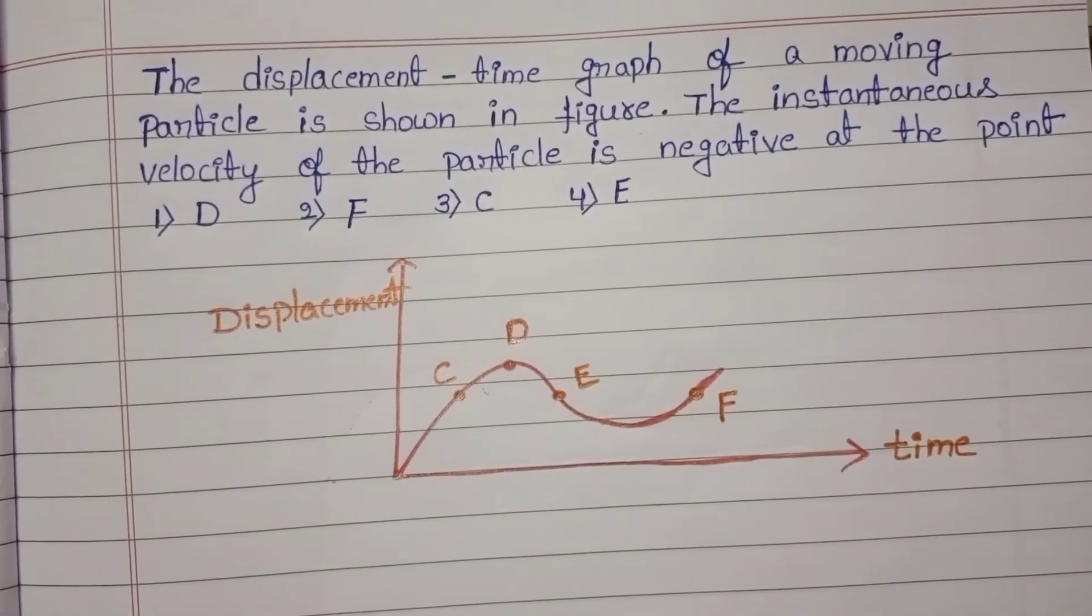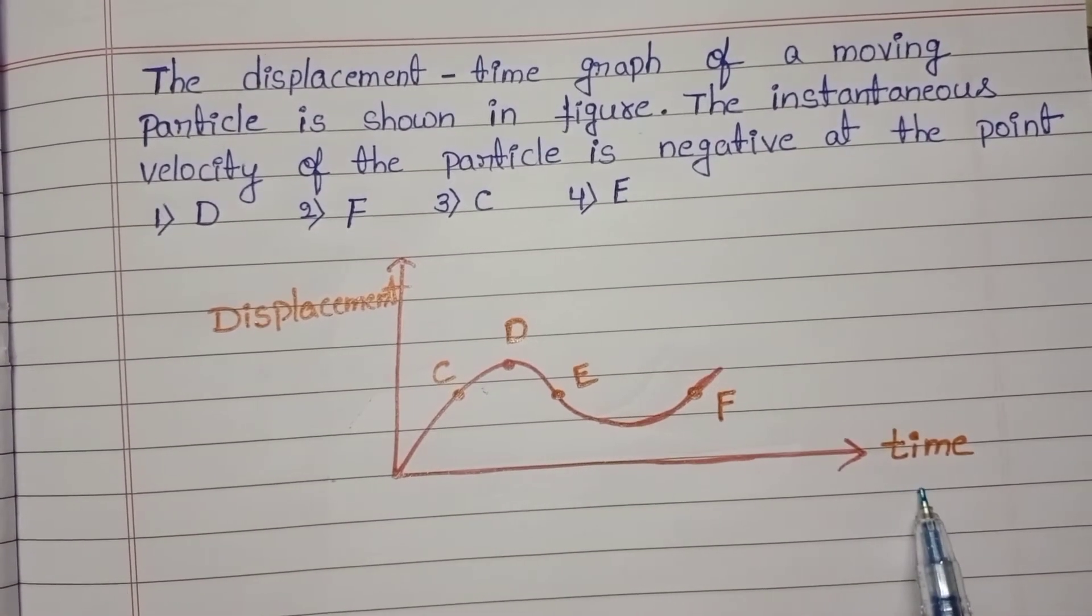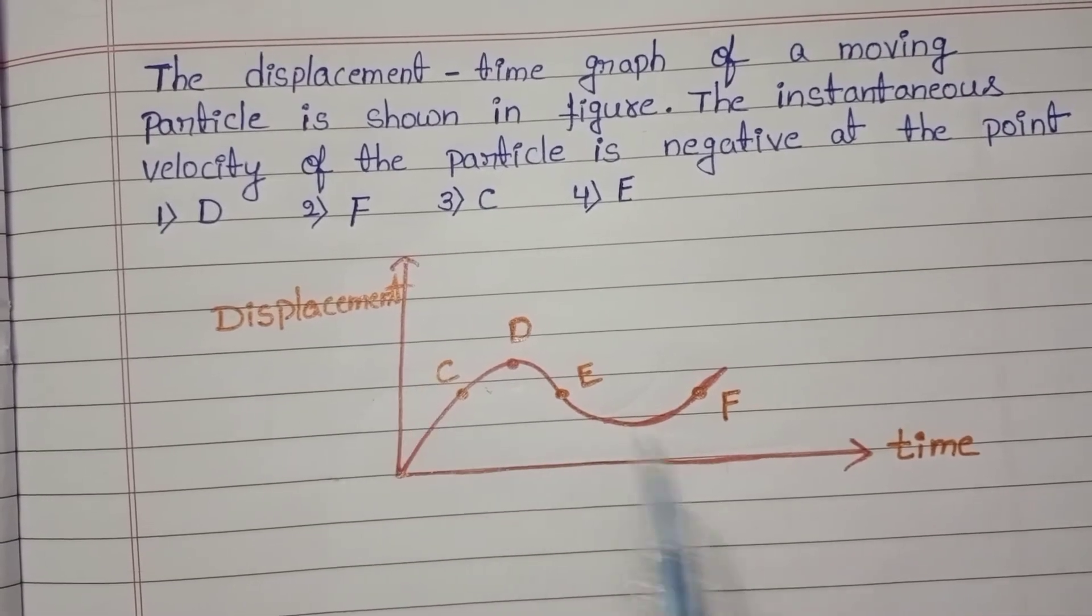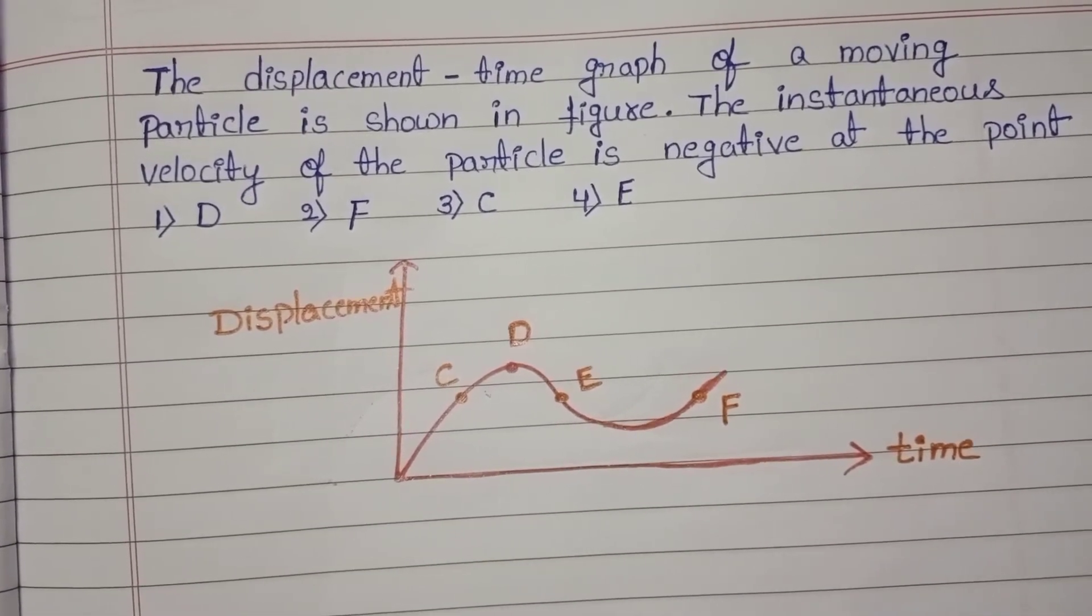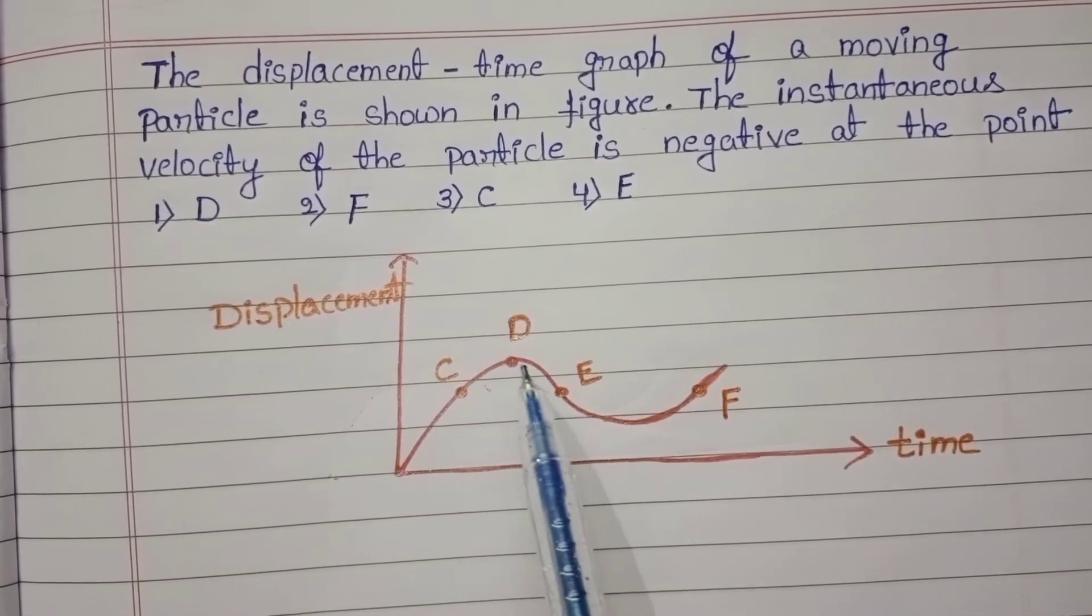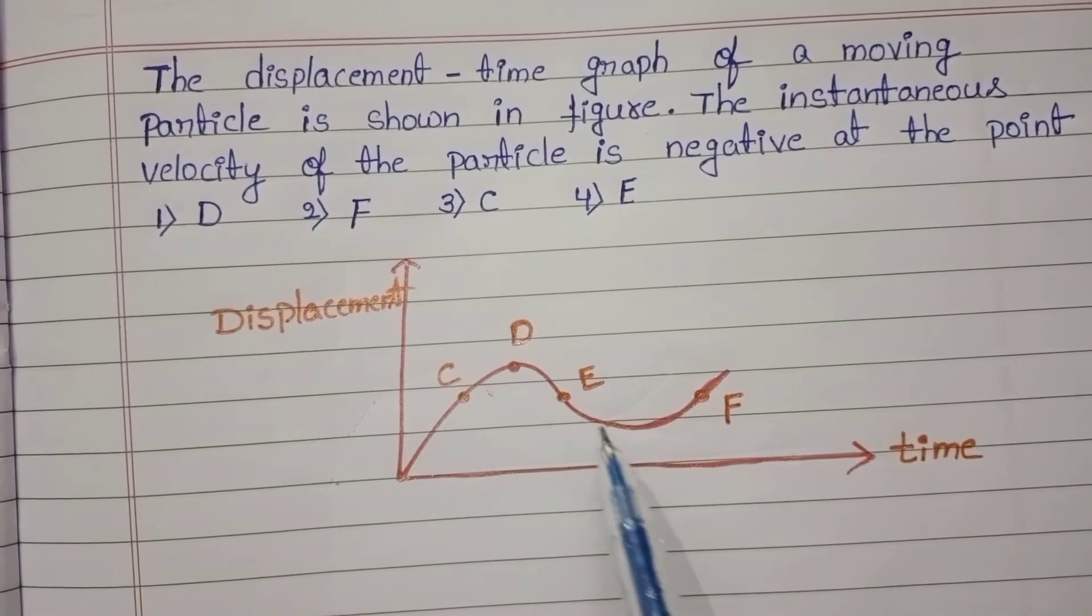Given graph is displacement time graph. Slope of displacement time graph gives the velocity, but this graph is curve, non-uniform motion.